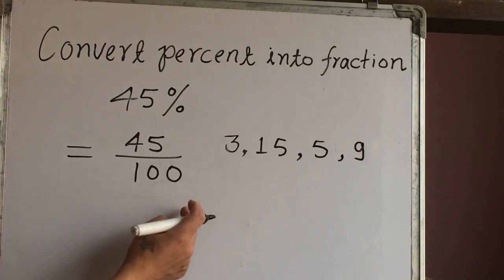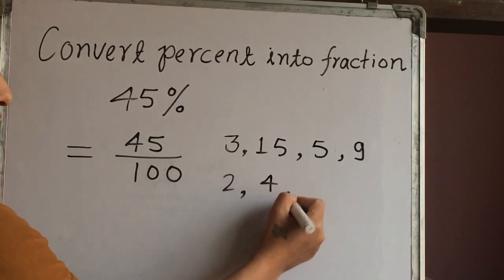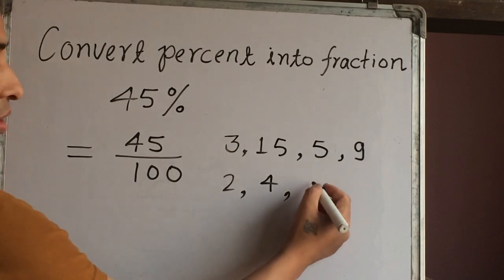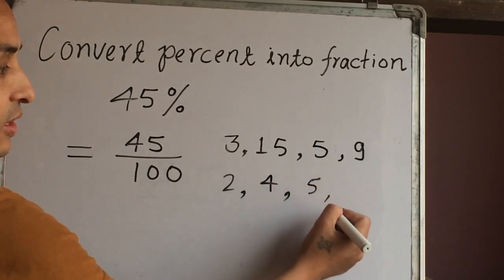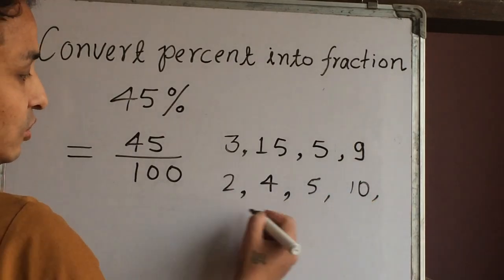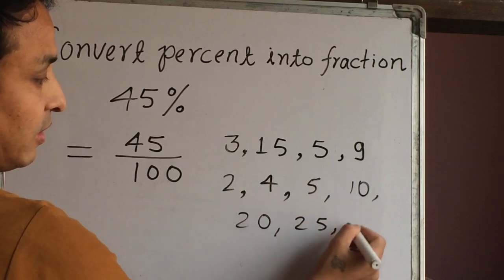Here we have so many numbers, and then we have 2, 4 - 2 times 20, 4 times 25, 5 times 20. And now 10 times 10, 20, 25, 50.